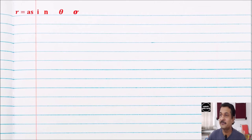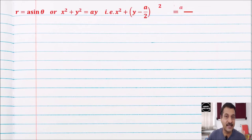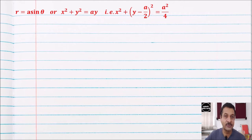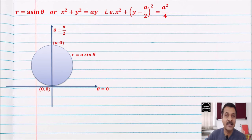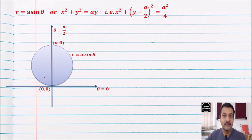Next is r = a sin θ, which is similar. In Cartesian form it gives x² + y² = ay. Note that when θ = 0, r = 0, and when θ = π/2, r = a, giving us this circle.